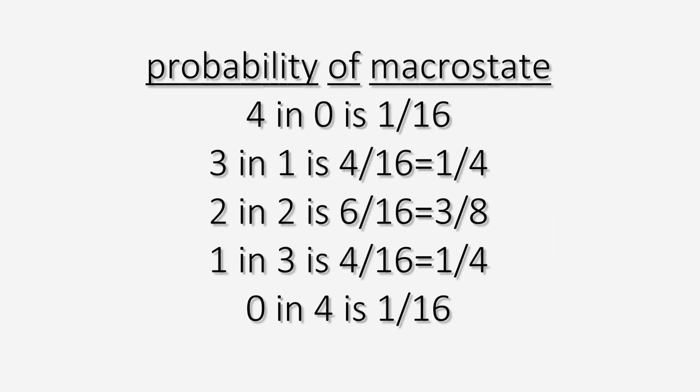The probabilities for each distribution are, as we can see, the state with the highest probability is two and two, meaning an even distribution between the halves of the box. Incidentally, this state also has the highest entropy.